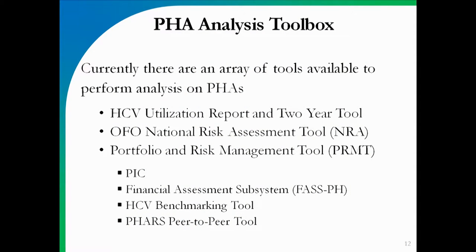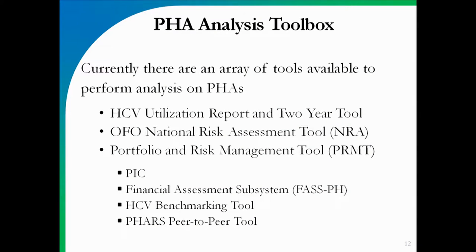When we go through the case study, we're going to use this PHA analysis toolbox. The HCV utilization and two-year report found on SharePoint is a phenomenal tool for looking at how the HCV program is performing in a certain PHA. The OFO National Risk Assessment Tool — today we'll refer to it as the NRA — is the backbone of our risk assessment for PHAs. How do we decide where to focus our resources? It's a good start. It helps us identify questions we need to ask and is some of the most heavily QC'd data we have.